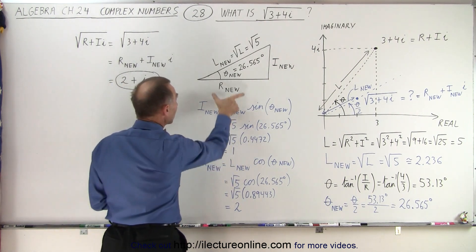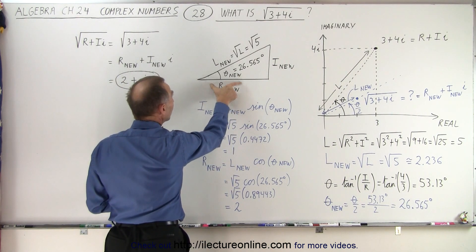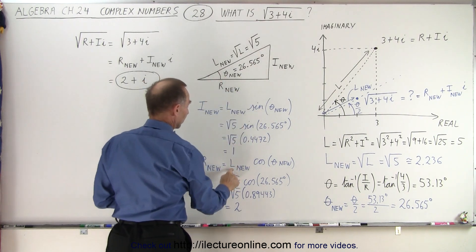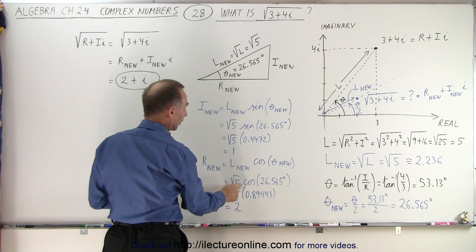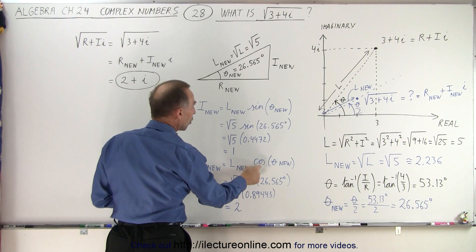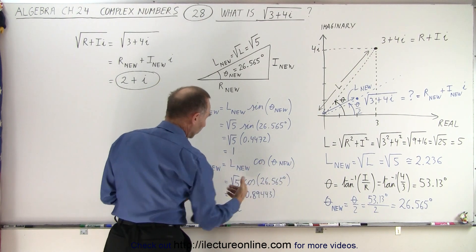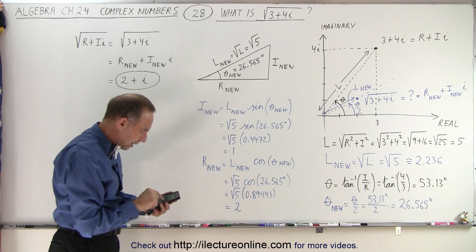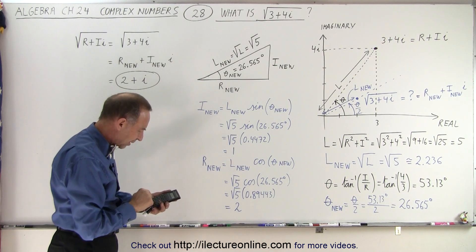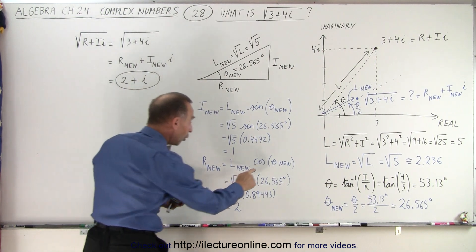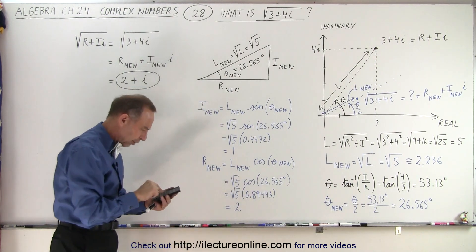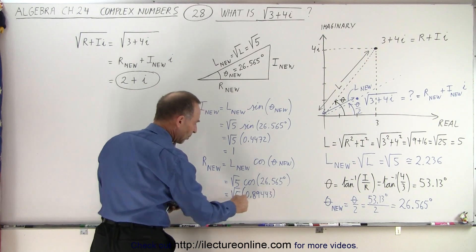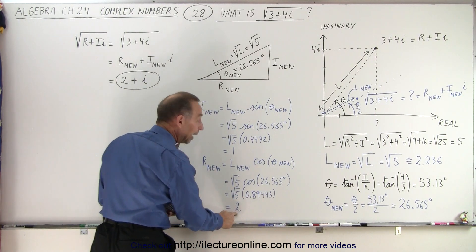Now, to get the new real part of our complex number, we again take the new hypotenuse length — which is the square root of 5 — and multiply it times the cosine of that new angle. So again, we take 53.13 divided by 2 and now hit the cosine button on our calculator. We get a number, multiply it times the square root of 5, and we get 2.